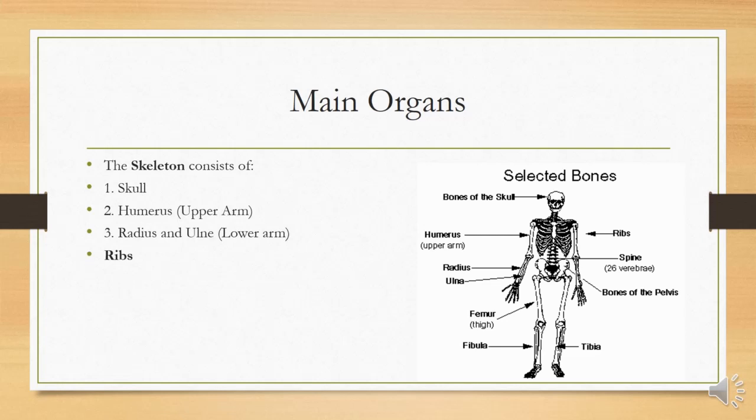The ribs which protect the lungs and other parts, and bones of pelvis, and the spine which consists of 26 bones, and femur which is the thigh bone, and fibula and tibia, these are the lower leg bones.